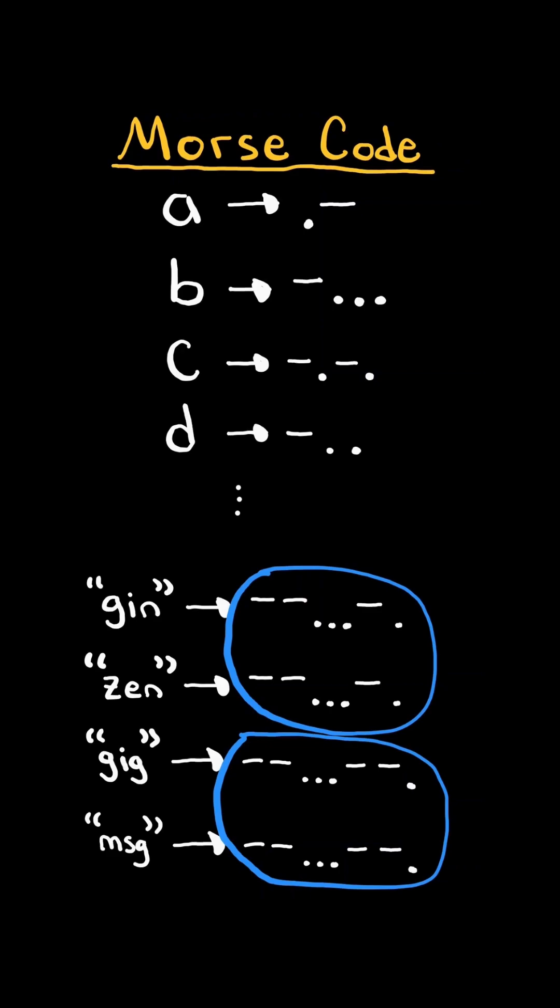Notice two different words can have the same Morse code transformation. Return the number of different Morse code transformations among all the words in the list.